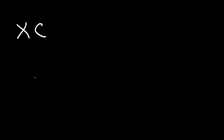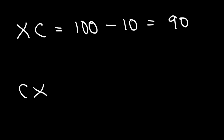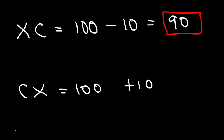Now try XC and CX. For XC, X is 10 and C is 100 — going from small to large, so we subtract: 100 minus 10 is 90. For CX, it's 100 then 10 — going from big to small, so we add: 100 plus 10 is 110.